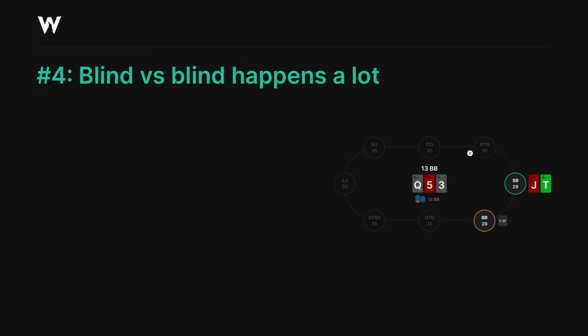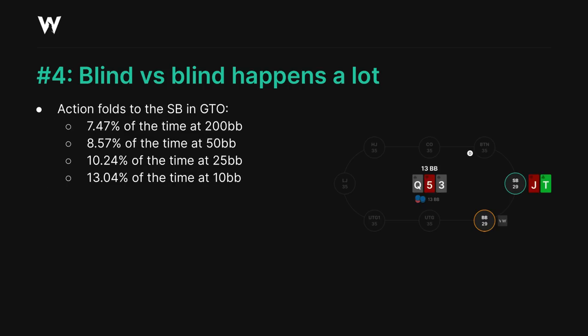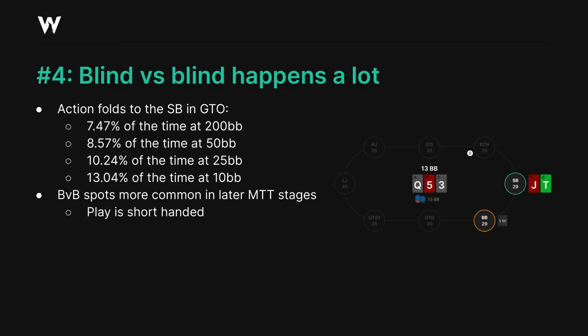Another key thing to remember is that blind vs blind play is actually one of the most common individual positional formations in tournament play. In a GTO scenario, action folds to the small blind somewhere between roughly 7% and 13% of the time if action is nine-handed. These numbers go up rapidly as we remove players from the table, so as we progress deeper into a tournament, short-handed play will increase the proportion of hands played blind vs blind.